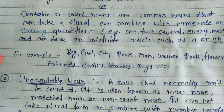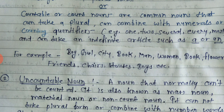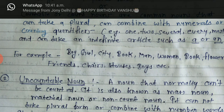Countable nouns can be singular and plural. Countable nouns can be combined with numerals — counting quantifiers like one, two, several, every, most — and can take an indefinite article (a or an). For example: a boy, girl, city, book, man, woman. The plural forms are: men, women, books, flowers, friends, chairs, houses, boys, etc.